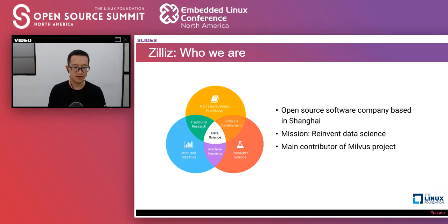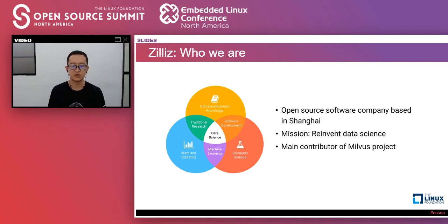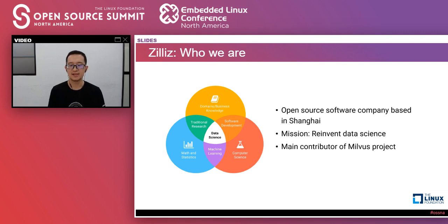A little bit more information about our company, Zilliz. Zilliz is the abbreviation of zillions of zillions, so by the name you can know we are engaged in data-related technology. We are a technology startup company founded in Shanghai. We focus on developing data science software based on heterogeneous computing. We drive our software business models through open source. Our vision is to reinvent data science and to help people better discover the value contained in data. Our open source project, Milvus, has now joined the LFAI Foundation as an incubation project.